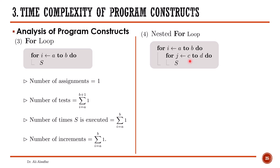We now analyze nested for loops, where the outer loop goes from a to b using iterator i, and the inner loop goes from c to d using iterator j. For nested loops, every loop is formulated by a summation — nested loops become nested summations. For counting assignments: the outer loop initializes once, and the inner loop initializes once per outer iteration, so the number of assignments equals 1 plus the summation of 1 from a to b.